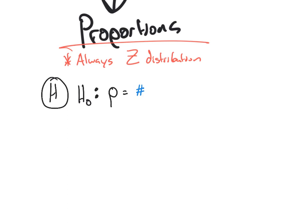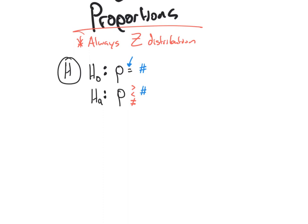Then we say, 'but we suspect that here in Lake Oswego, the number is higher' or 'the number is lower' — that gives us the alternative hypothesis. The alternative hypothesis is p compared to that number: it could be strictly greater than, strictly less than, or not equal to. It will never have an equal sign in it. The equal sign only comes in the null hypothesis.